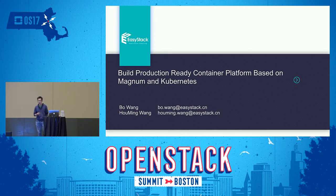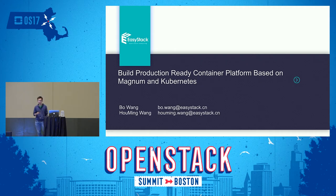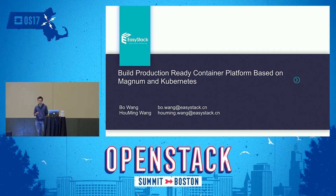As we know, there are three container orchestration engines in Magnum: Mesos, Swarm, and Kubernetes. We choose Kubernetes, so all the contents in this slide are focused on Kubernetes.